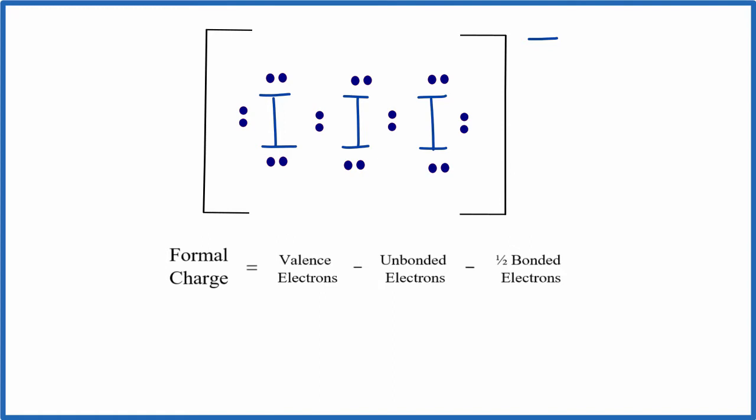but the I3 minus Lewis structure has 22, so I need to add an additional 2 valence electrons, and I really don't know where to put them in this structure. And that's what formal charges are going to help us figure out, which iodine should we put those extra 2 valence electrons on.